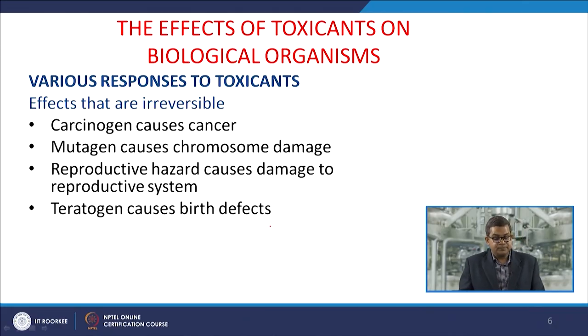When studying the different responses of toxicants to the biological system, we must consider two aspects: responses that are irreversible in nature and those that are reversible. Sometimes toxicants create genomic problems that are highly irreversible. Different types of responses include carcinogens, which cause cancer, and mutagens, which cause chromosome damage.